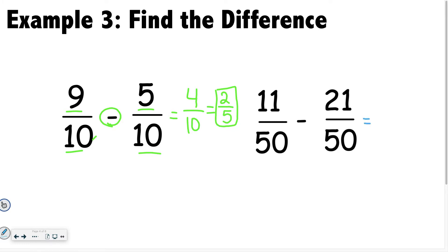Hopefully you realize 11 minus 21 is going to give you a negative 10 over 50 or a negative 1 over 5 once you simplify it.